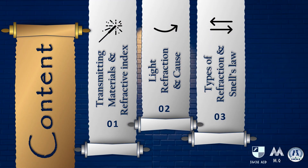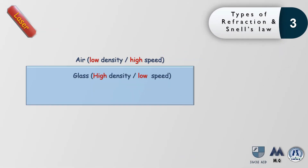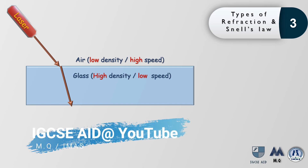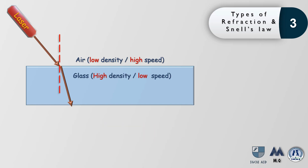Next, let's look at the types of refraction and Snell's Law. The first type is when the light ray goes from a low density medium to a high density medium — or from a high light speed medium to a low light speed medium — such as from air to glass. In this case, the refracted ray deflects towards the normal, and the angle of incidence is greater than the angle of refraction.